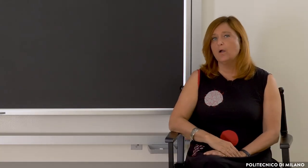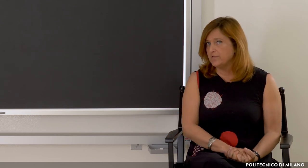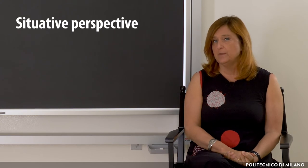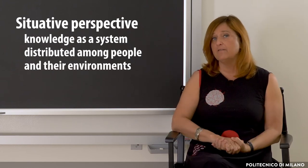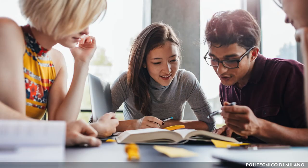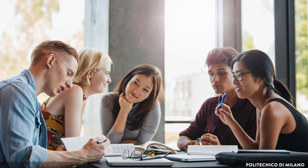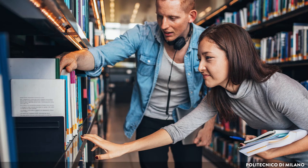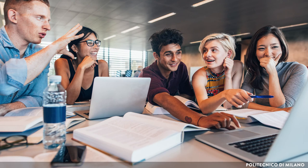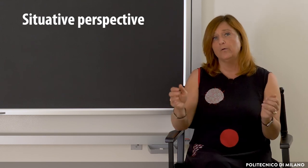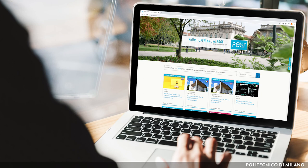The third perspective is the so-called situative perspective. Knowledge is seen as a system distributed among people and their environments. Other individuals, seen as bringers of knowledge, are naturally part of these environments. But we are also talking about physical objects such as libraries, books, magazines, where knowledge physically resides — and through the digital world, which can be accessed both in terms of content from various sources and in terms of structured content with a broader learning goal, for example massive open online courses, which are surely a source of usable, organized and qualified content.